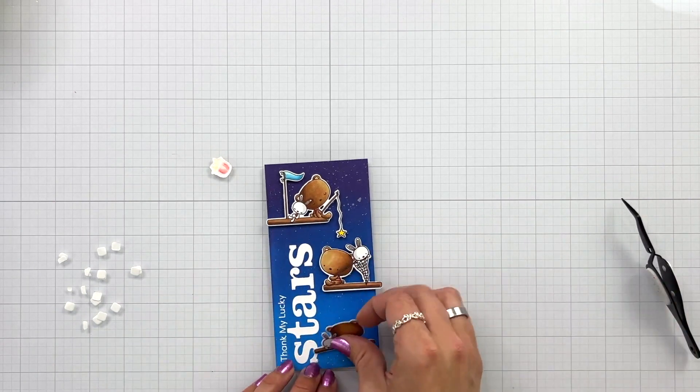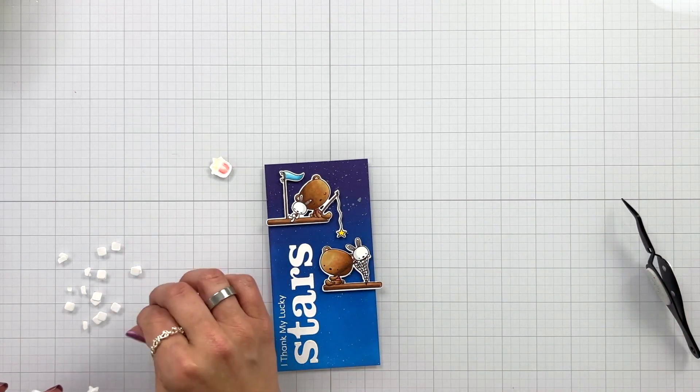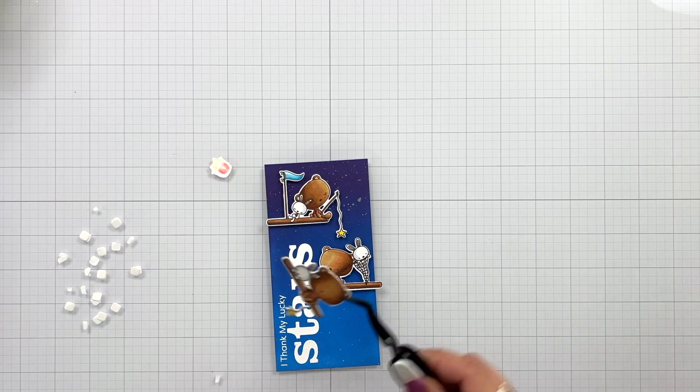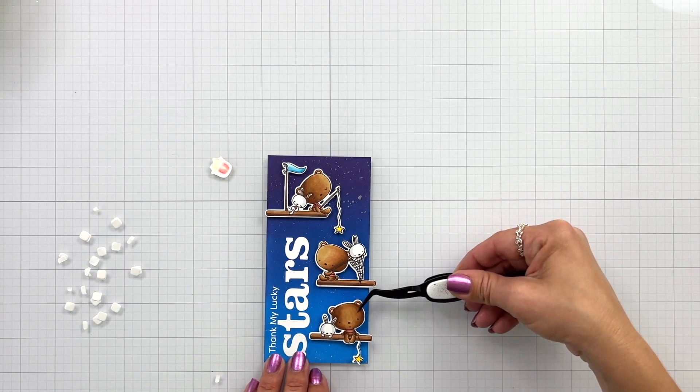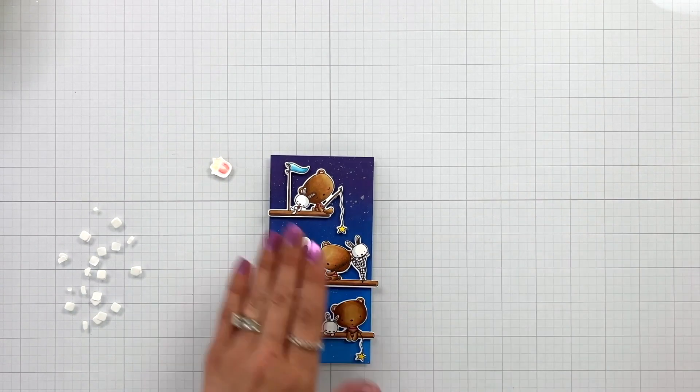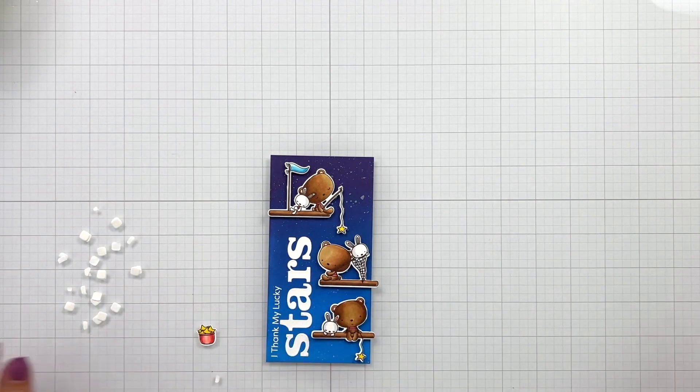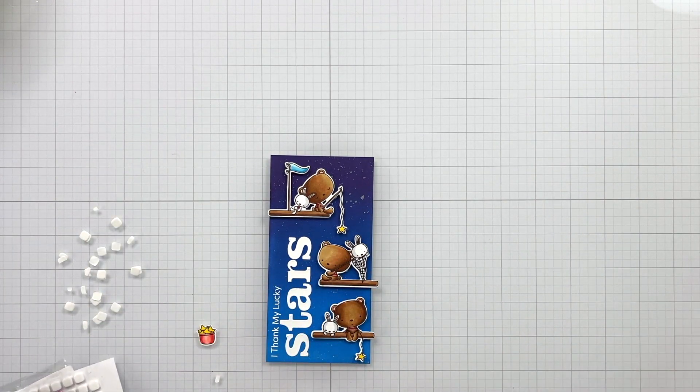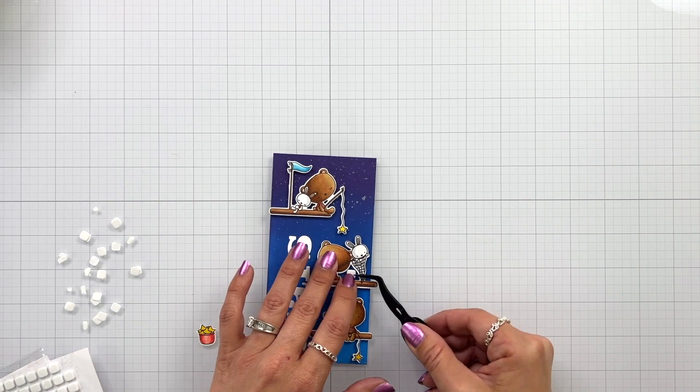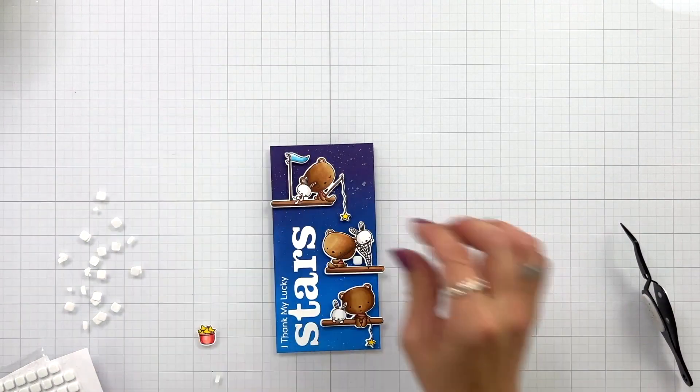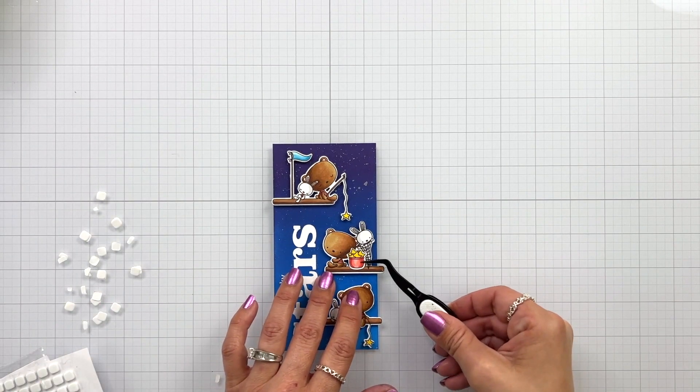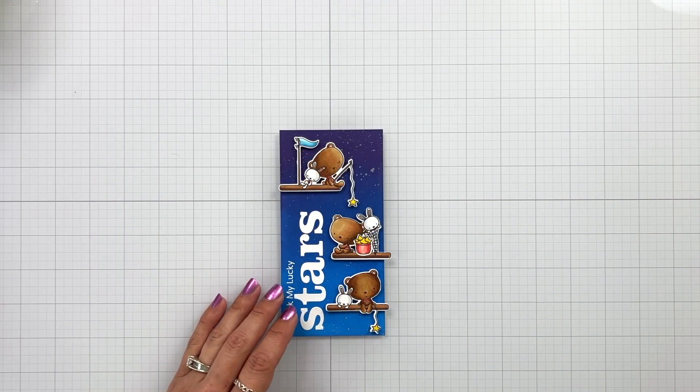So you are going to notice some of these are hanging off of the edge and I was okay with that. I can trim off that excess as long as I wasn't cutting off any of the image. And then for that little bucket of stars instead of trying to add a foam square behind that I added a small foam square right in between the bear and the bunny which fit perfectly, and then I could add the bucket of stars on top of that.